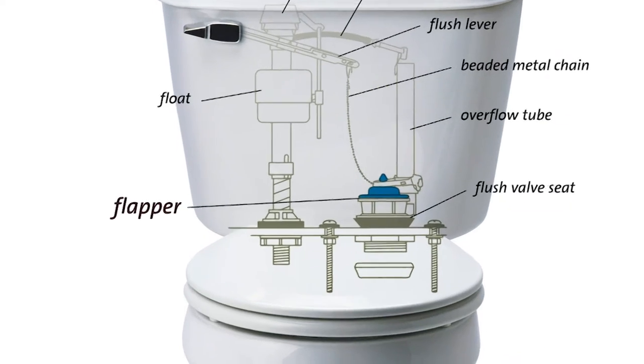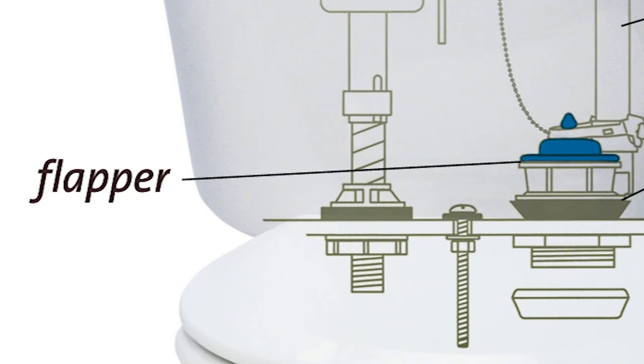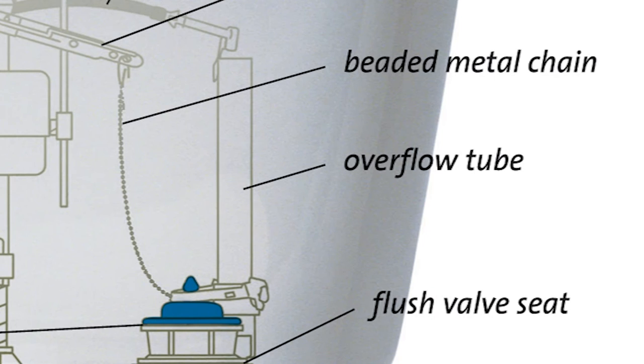Flapper leaks are the most common culprit. Replacing the flapper will likely stop the leak. Be sure the flapper chain is the appropriate length. It's a good idea to redo the dye test after you replace any parts.